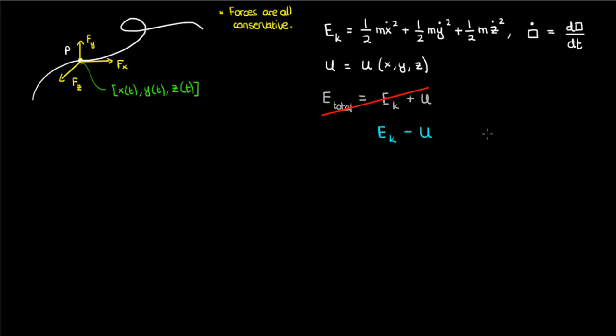Now you might wonder why I'm subtracting the kinetic and potential energies. After all, subtracting them doesn't give you anything physically meaningful like total energy. Or does it? I'm going to ask you to suspend your disbelief and believe me when I say that ek minus u is indeed a meaningful physical quantity. In fact, it even has a name — it's called the Lagrangian of the system, which I'll denote by this fancy L.